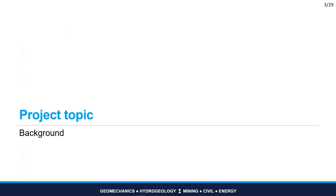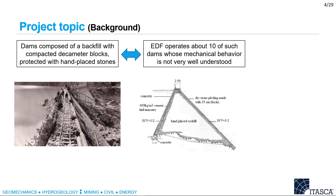Starting with the project background: the studied dams are rockfill dams composed of a backfill with compacted decameter blocks, protected with hand-placed stone. On the left figure we can see how they were built in the 1950s — dumped rockfill in the middle of the dam with both faces protected by hand-placed stones. On the right figure, we can see the historical cross-section of one of those dams, showing the hand-placed and dumped rockfill in the body, with stone pitching on both faces.